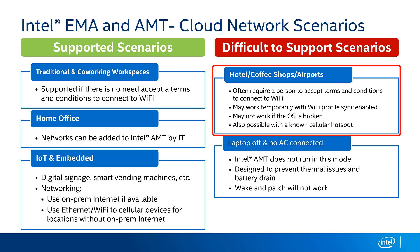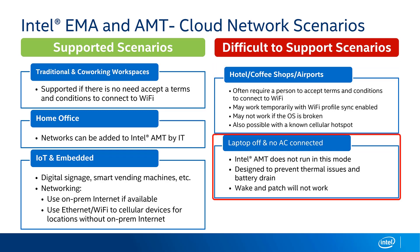For road warrior types who are always on the go, you can work around captive portal issues by supplying them with a hotspot or pre-configuring hotspot settings on their phone, so you can turn on the Wi-Fi hotspot and still make use of Active Management Technology via that Wi-Fi to cellular bridge. Also worth noting: laptop devices that are not plugged into power and are in a hibernate or off state do not have AMT running. This is to avoid draining batteries overnight and to prevent potential overheating if the system is in a bag and processor-intensive work is triggered.